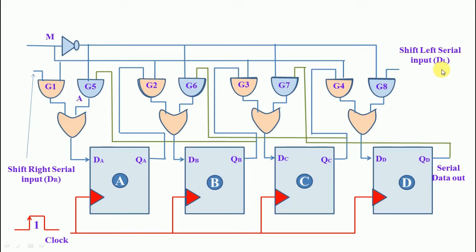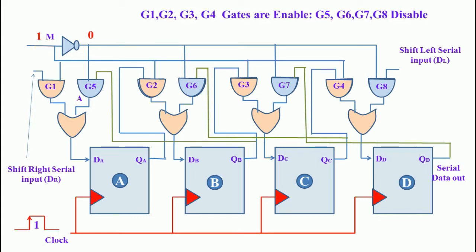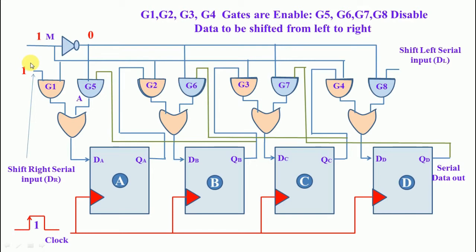Now we apply control signal value 1. This 1 is directly fed into G1, G2, G3, and G4, so G1, G2, G3, and G4 are enabled. In this condition, data is shifted from left to right. Taking input value 1, this 1 is loaded into DA. After applying the first clock pulse, the DA input is shifted and this 1 is loaded into DB.